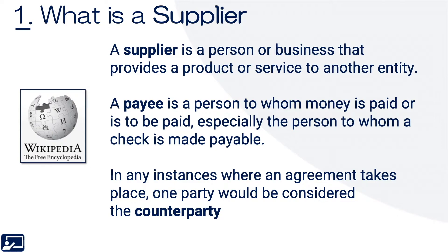First topic: what is a supplier? A supplier is a person or business that provides a product or service to another entity. A payee is a person to whom money is paid or to be paid, especially the person to whom a check is made payable. In any instances where an agreement or contract takes place, one party would be considered the counterparty.